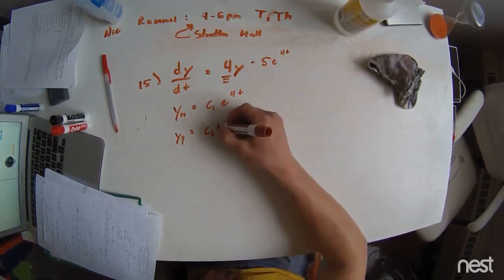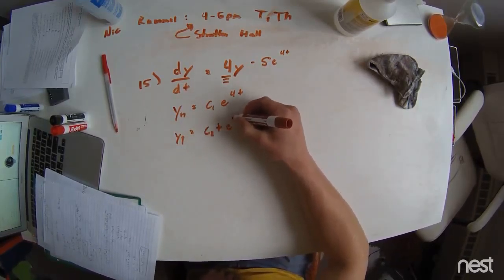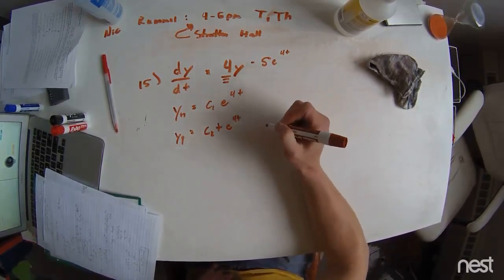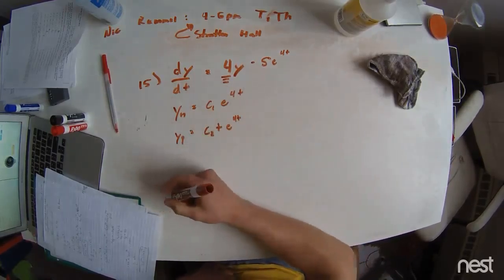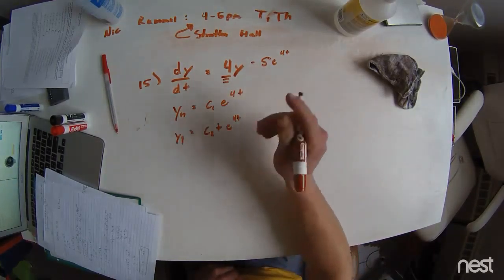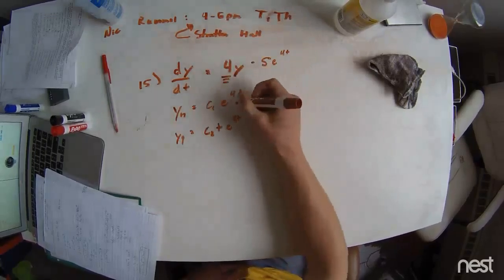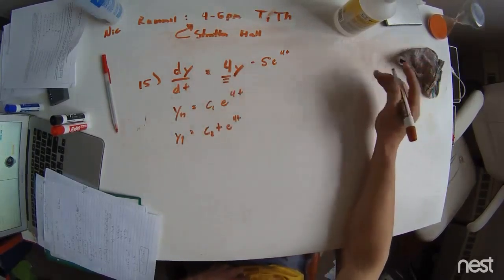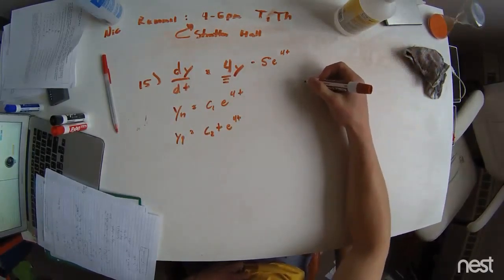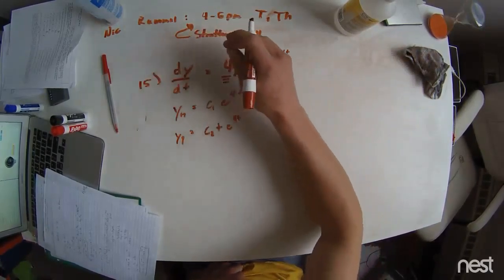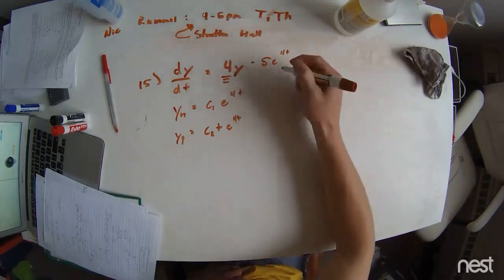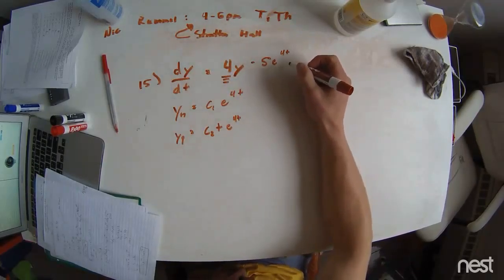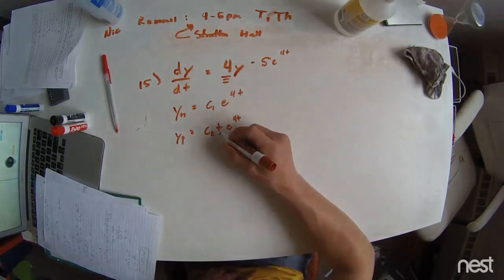Which is C2t times e to the 4t. The reason that we do that is just so that these are different, and the reason behind that is if I take this away, this solution still solves it. So we have to have something different than this to be able to have this term survive in the solution.